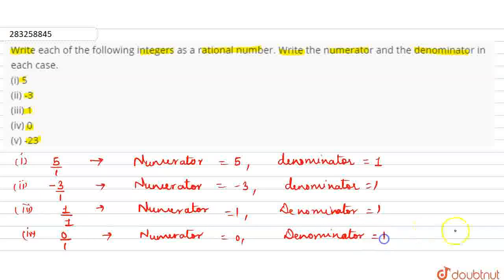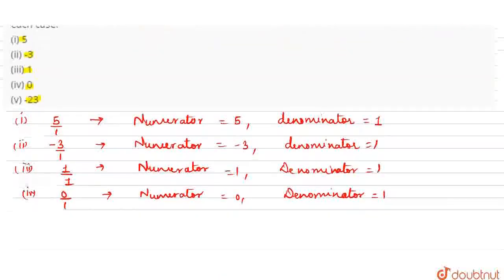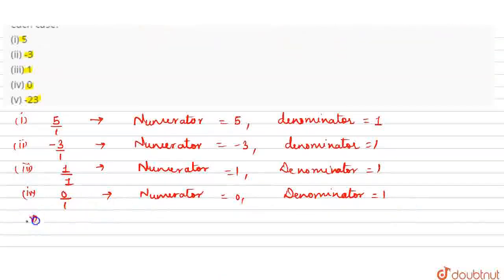Next we have minus 23. We write minus 23 by 1. The numerator is minus 23 and denominator is equal to 1. These are our required answers.